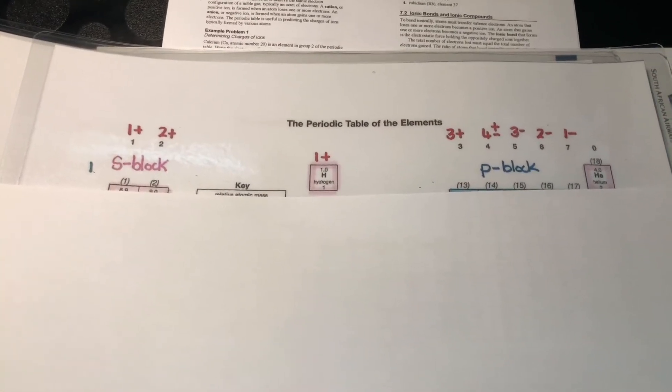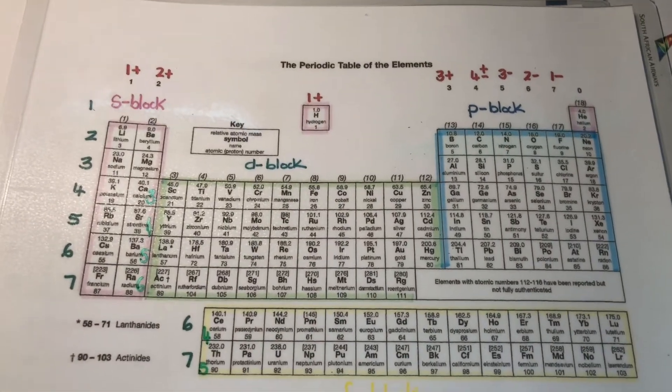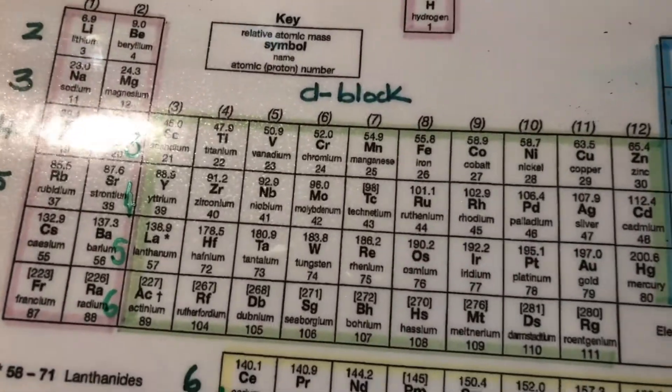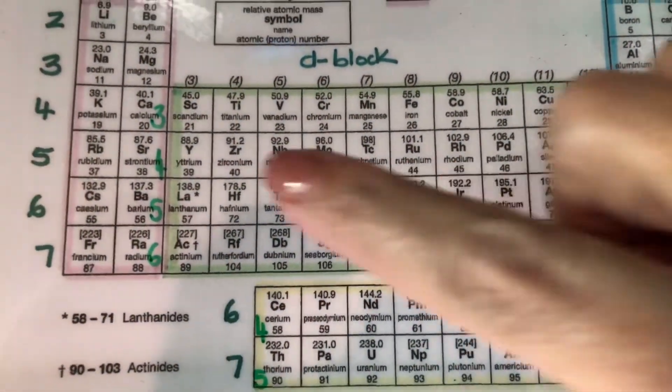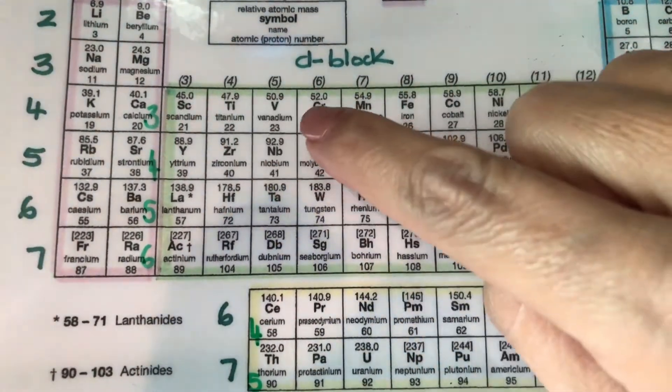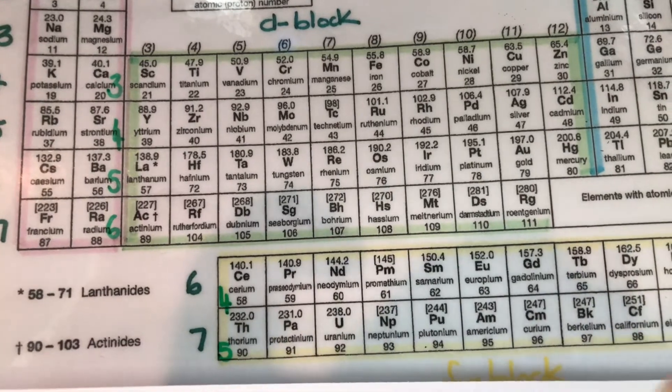So if you want to write the SP notations you need to prepare the periodic table by demarcating your blocks and then something else that you need to add in here is you would have to add in the fact that this becomes 3D, 4D, 5D, 6D and this is your 4F and your 5F.